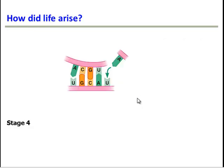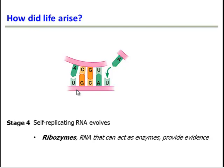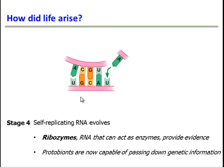Our last stage is that self-replicating RNA evolves. Before this, we had RNA, but it wasn't capable of making more RNA. In order to be a living thing, you've got to be able to pass down your genetic information to offspring. So when this stage occurred, we finally had something that could be considered a cell. Evidence for this is the fact that RNA in some simple bacteria can act as an enzyme — rather than needing a whole protein, the RNA can catalyze reactions on itself. This lends evidence to the idea that RNA might have evolved to replicate itself. We call this idea the RNA world hypothesis — the idea that RNA evolved before DNA.